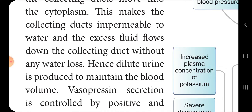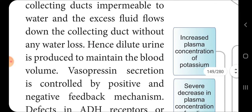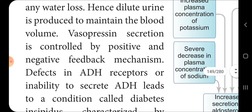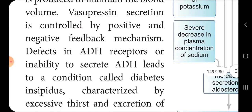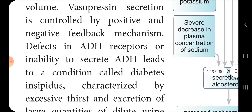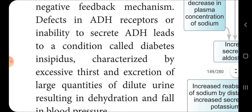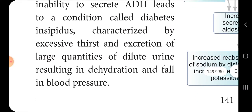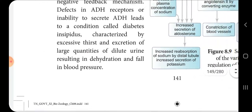Hence, dilute urine is produced to maintain the blood volume. So vasopressin secretion is controlled by positive and negative feedback mechanisms. A defect in ADH receptors or inability to secrete ADH leads to a condition called diabetes insipidus, characterized by excessive thirst and excretion of large volumes of dilute urine, resulting in dehydration and a fall in blood pressure.